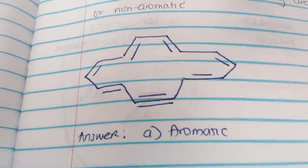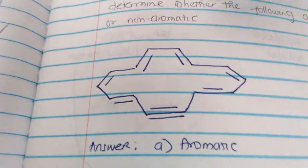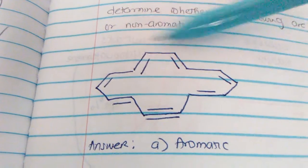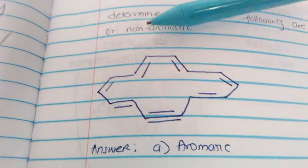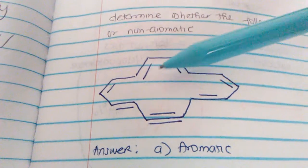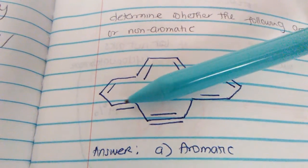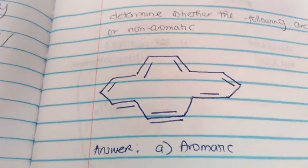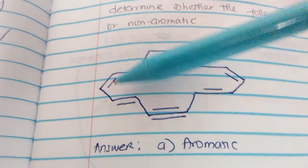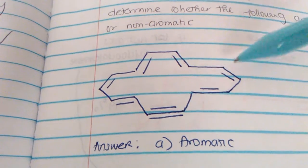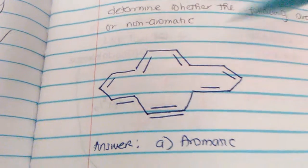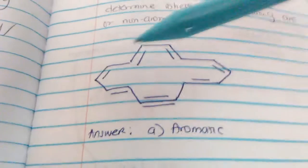A quick way to tell if something is aromatic: count the number of bonds in the ring. If I count 1, 2, 3, 4, 5, 6, 7 — an odd number of bonds means it's aromatic. For example, a compound with bonds giving 2, 4, 6, 8, 10, 12, 14 electrons — that's 14 electrons and it's aromatic, even though this atom is sp-hybridized.